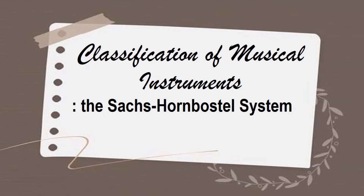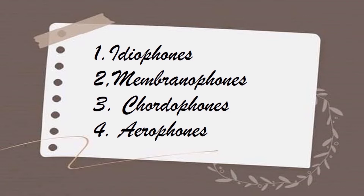Welcome to our next lesson. Today we are going to talk about the classification of musical instruments — the Sachs-Hornbostel system. You need to learn about these classifications in order to classify instruments in your instrumental music topics. We have four classifications: idiophones, membranophones, chordophones, and aerophones.